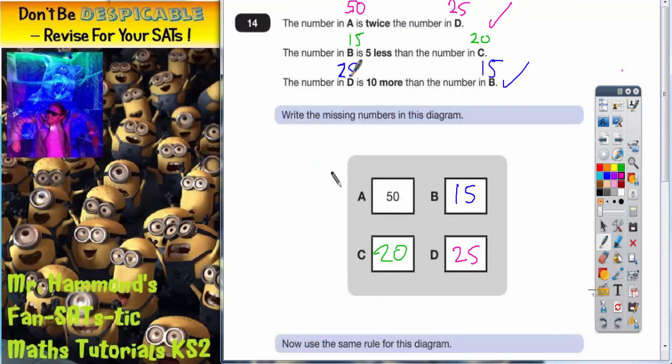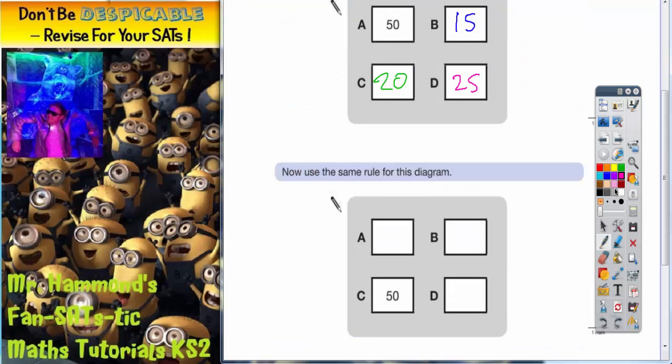The number in B is 5 less than the number in C. So B needs to be 5 less than the number in C. So 5 less than C, which is what it says in the clue, 5 less than 50 is 45. So B has got to be 45.